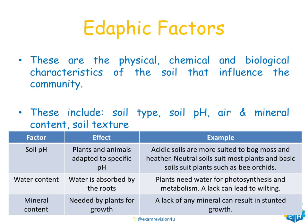Edaphic factors refer to anything to do with the soil — the physical, chemical, and biological characteristics that influence the community. These include soil type, soil pH, air and mineral content, and soil texture. Plants and animals are adapted to specific pHs: acidic soils suit bog, moss, and heather; neutral soils suit most plants; and basic soils suit plants such as bee orchids.